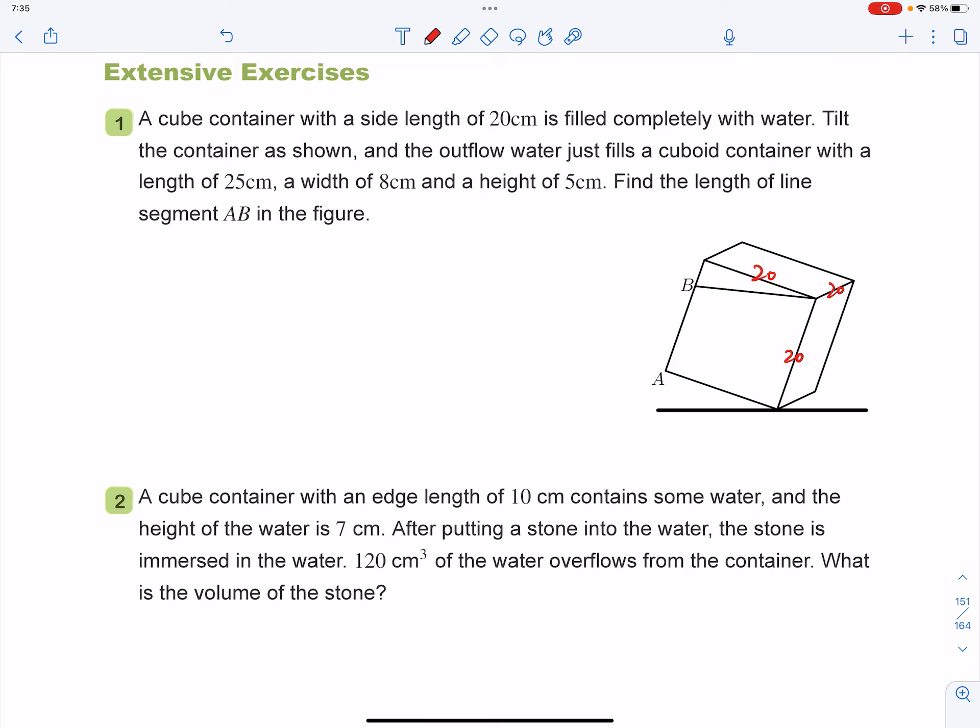So guys, as for this question, you need to find the volume of water that just outflowed, right? So that'll be this part. And this shape over here is also a prism, so you can get the volume by doing this shape, this area of this triangle, times by the height over here.